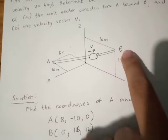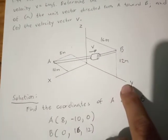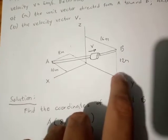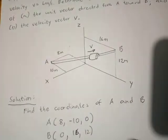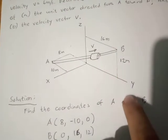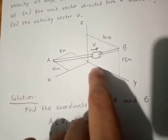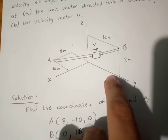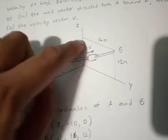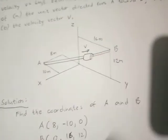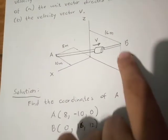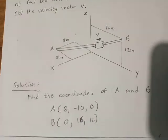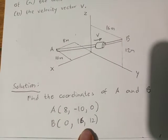Dito naman tayo kay point B. Obviously, 0 siya kay X kasi nandito siya kay Y axis tumigil. So 0 yung X. Then, yung X is 0. Y axis, eto, is 16. Kaya 0, 16. Saka yung Z niya is naka-elevate siya ng 12 pataas. Kaya positive lahat. 0, 16, 12.